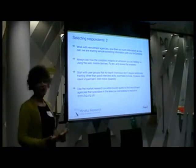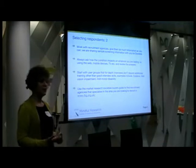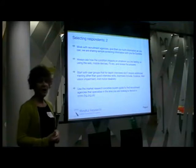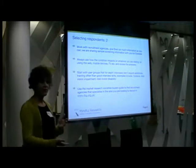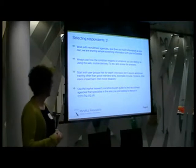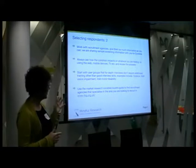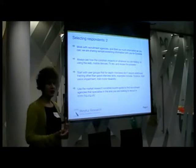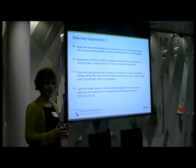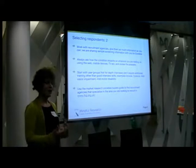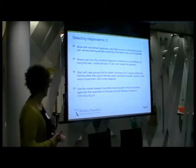Most people are using recruitment agencies, so work with them and give them as much information as you can. Kath and I have prepared a screener that you can take away at the end of the day — you can give that to your agencies and say this is what we're looking for. A key thing: whenever you're recruiting people with access needs, always ask how the condition impacts on their use of technology. For some people it won't be that strong, so read the feedback and decide whether person A is suitable and person B isn't.